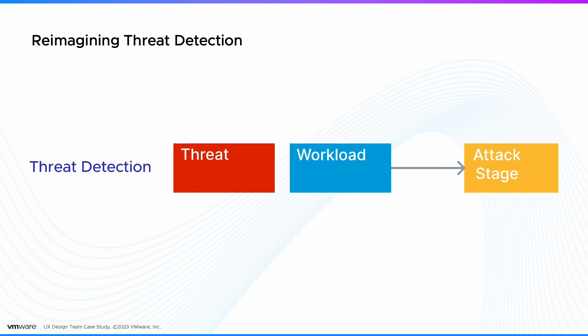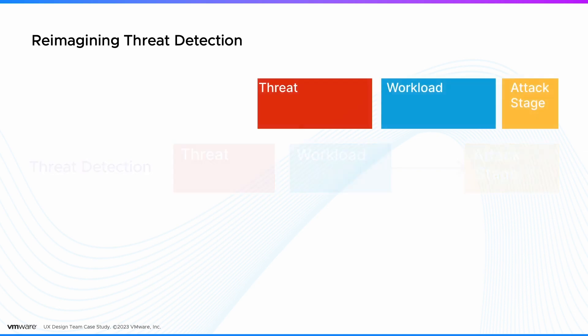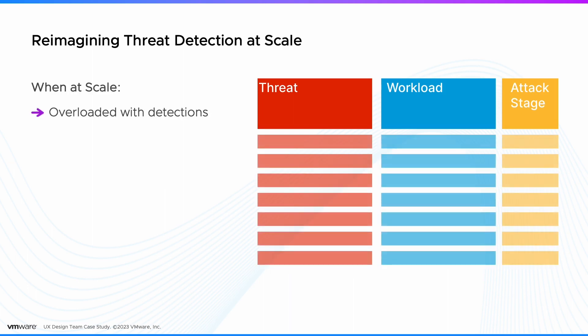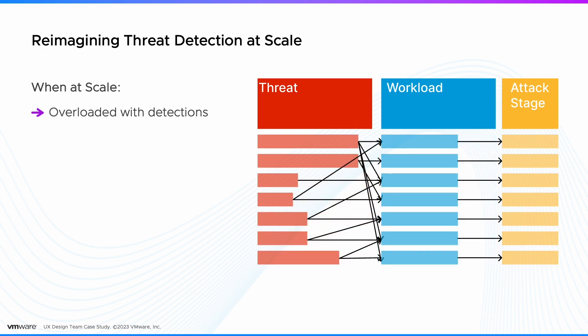A single detection consists of the threat, affected workload, and the attack stage. It may look simple, but in reality the scale will expand exponentially. In chain attacks, threat detections may come in huge numbers and users can easily be overloaded with alerts. Also, there are complex connections between threats and workloads. Not to mention that users also need to consider the score each detection may receive according to its impact.